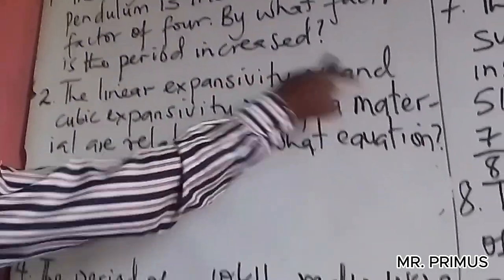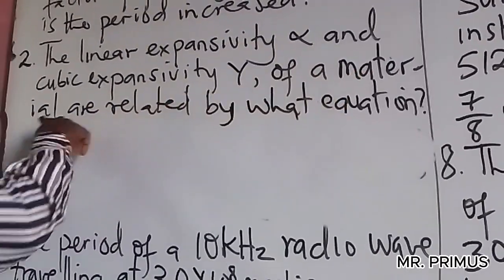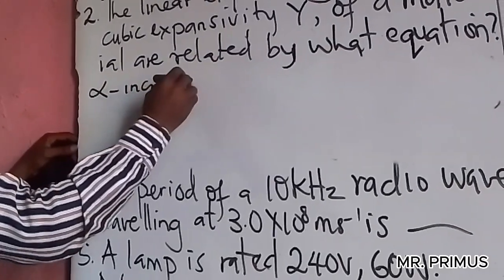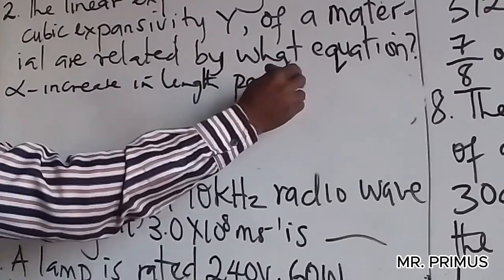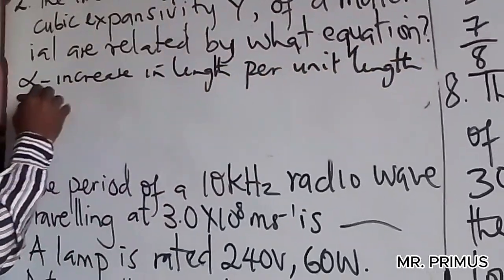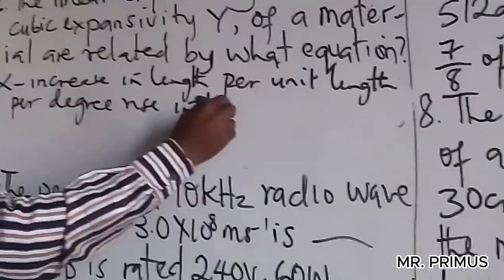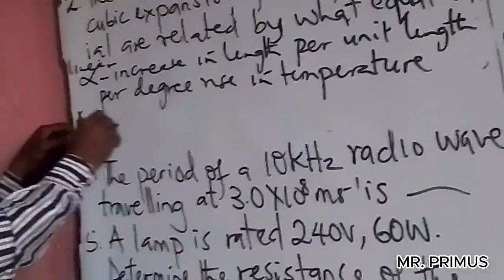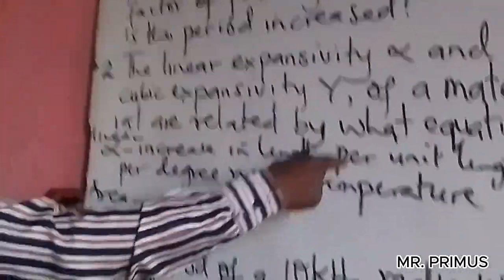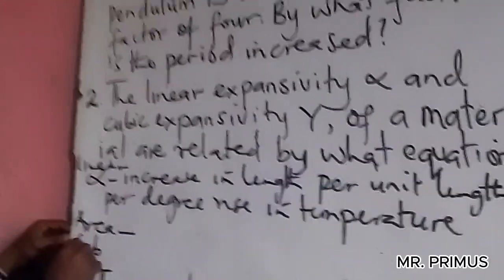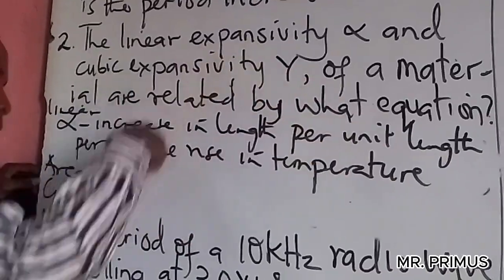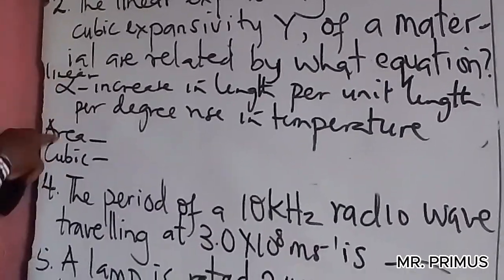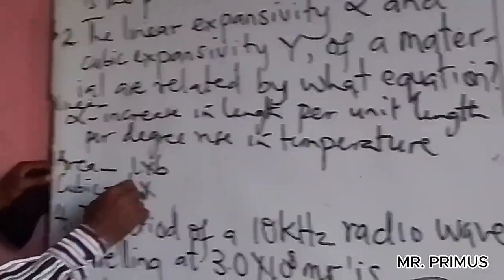The linear expansivity alpha and the cubic expansivity gamma of a material — what equation relates them? Linear expansivity is defined as increase in length per unit length per degree rise in temperature. Area expansivity is defined as increase in area per unit area per degree rise in temperature. You know that area is length times breadth, and cubic is length times breadth times height.